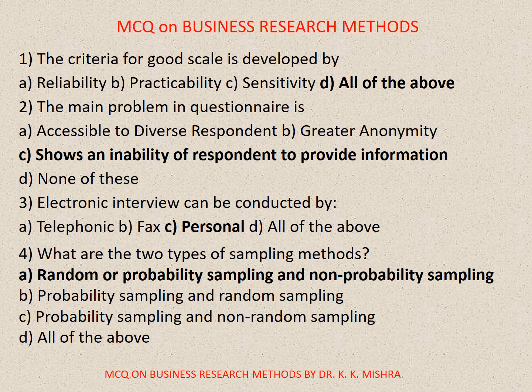Question number 2. The main problem in questionnaires is. Options are: A. Accessible to diverse respondents, B. Greater anonymity, C. Shows an inability of respondents to provide information, D. None of these. Correct option is C: Shows an inability of respondents to provide information.